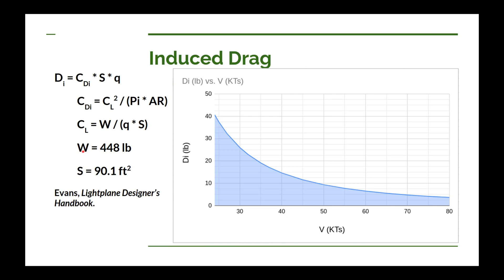The weight I'm using in this calculation is the empty weight of the airplane — 254 pounds — plus the weight of a standard pilot at 170 pounds, plus a parachute allowance of 24 pounds. The surface area of the wing comes from a previous video on the design of the UWS-1 airplane; I'll put a link in the upper right-hand corner. You can get these same equations from just about any airplane design book, but the particular one I used was Evans's Light Plane Designer's Handbook.